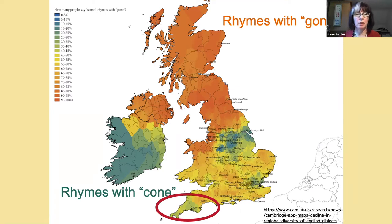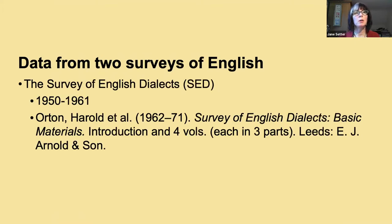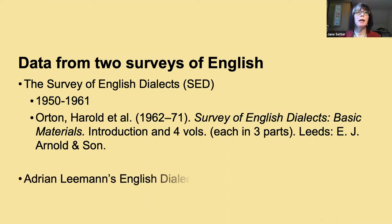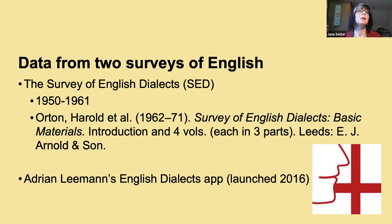I'm going to show you data from two surveys of English. One is the Survey of English Dialects, done in the 1950s and early 60s, which has been revived at the University of Leeds. The other is from Adrian Leemann's English Dialects app, which is where the scone map data came from. I'll show you comparisons of accents in England in the 1950s versus accents from 2016 onwards.